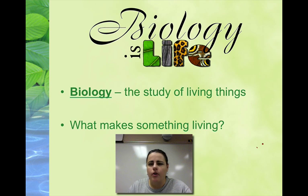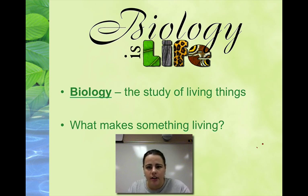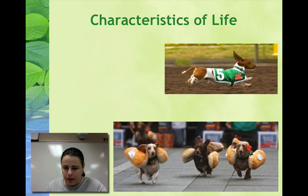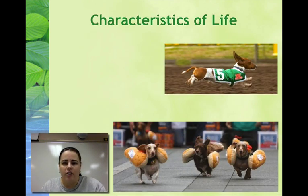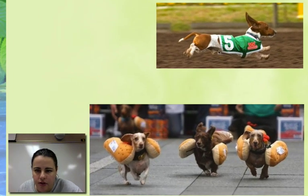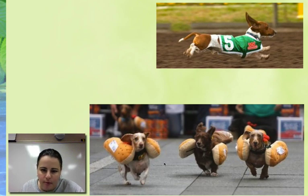We're going to go over a list of defined characteristics used to define whether or not something is living. I have this acronym for you called DOG RACE, and each letter is going to stand for one of the characteristics of a living organism. I put these cute pictures of dogs racing to help you remember.